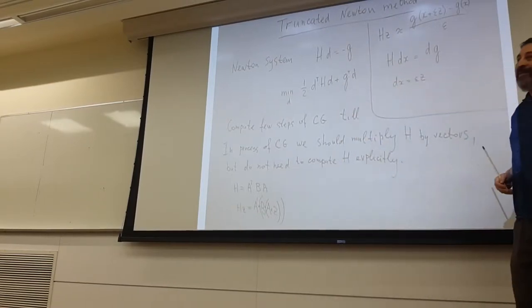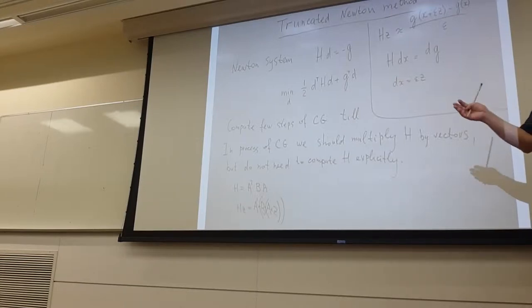So we have this quadratic function with respect to displacement our Newton step, and the word truncated Newton means that we do not solve it till N because maybe we have many thousands of variables, but we solve it with reasonable accuracy say using 20 or 100 conjugate gradient steps and then do line searching in this direction which we obtained after 20 conjugate gradient steps and continue so on.